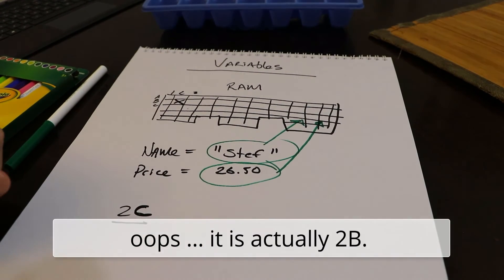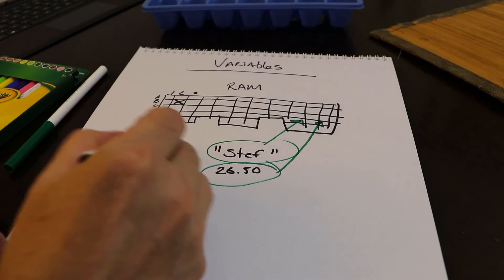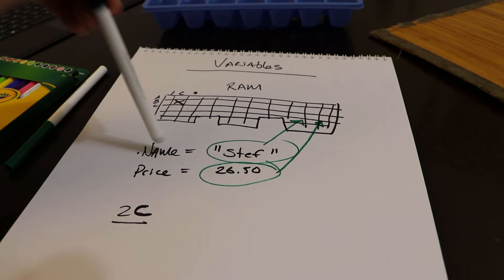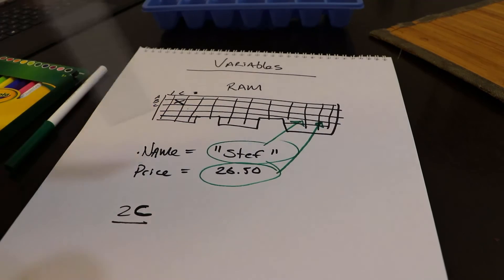Now, in the old days, coders would have to remember, okay, I put name, the name variable inside of 2C, and you have to track all that. What a pain. With modern languages like Python, JavaScript, Java, C sharp, and many others, Swift, you don't have to do that. You create your variable, and the programming language will just stick the information in a slot in RAM for you.